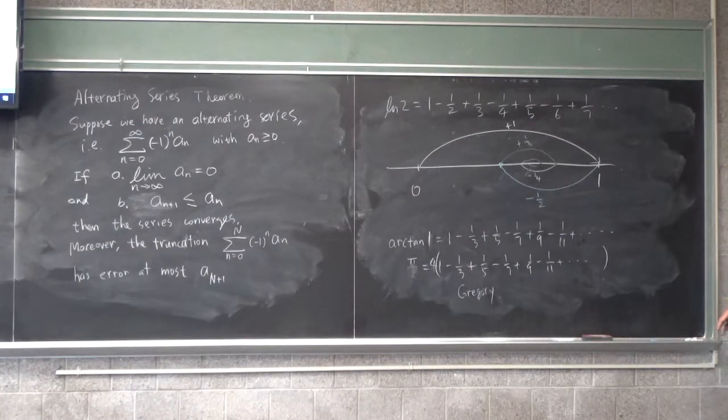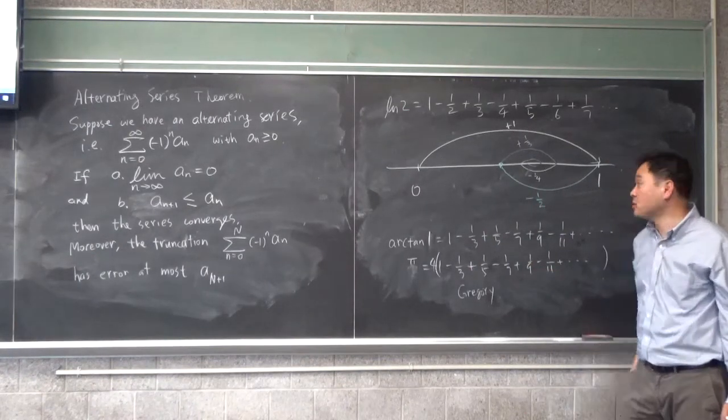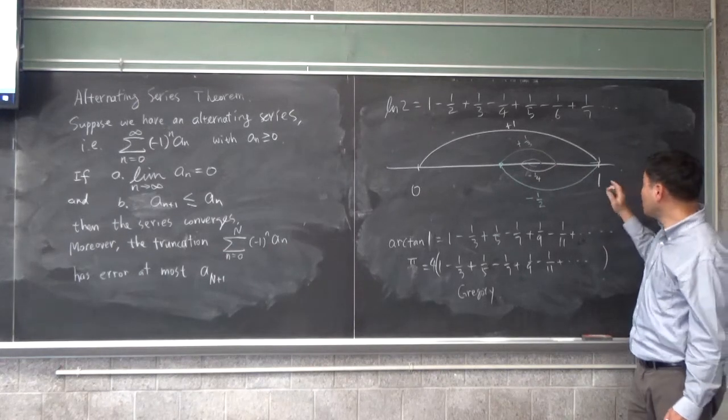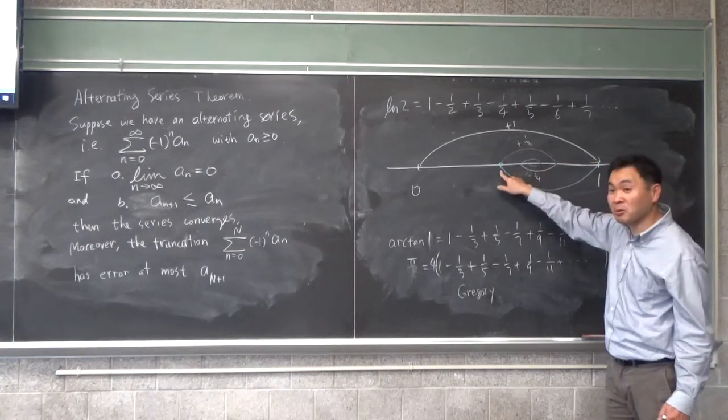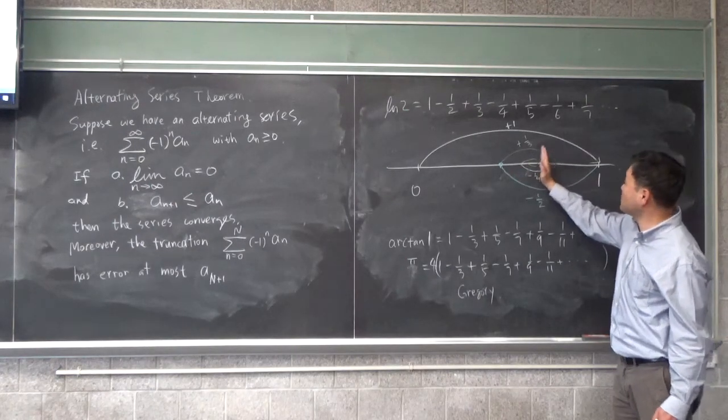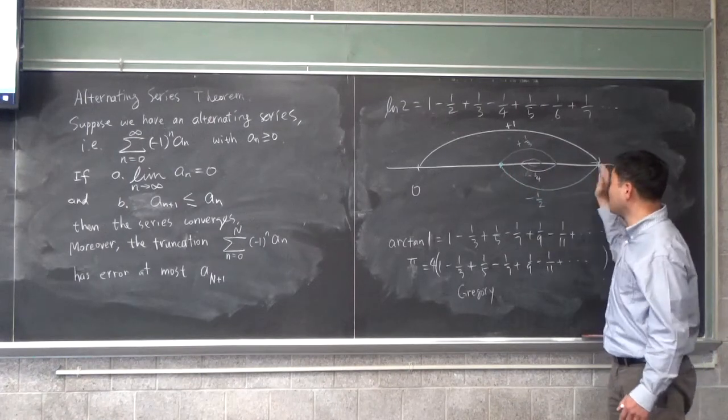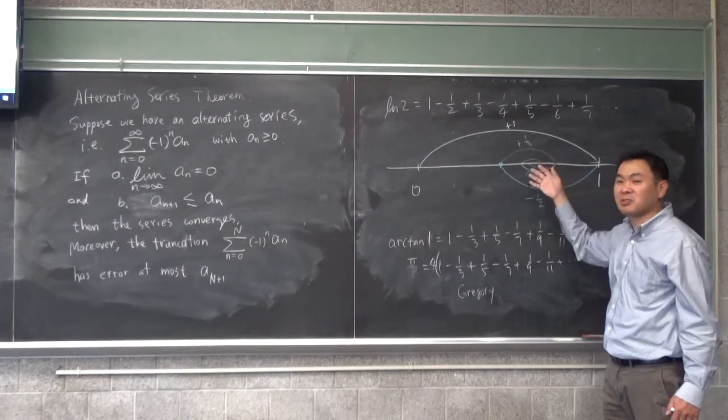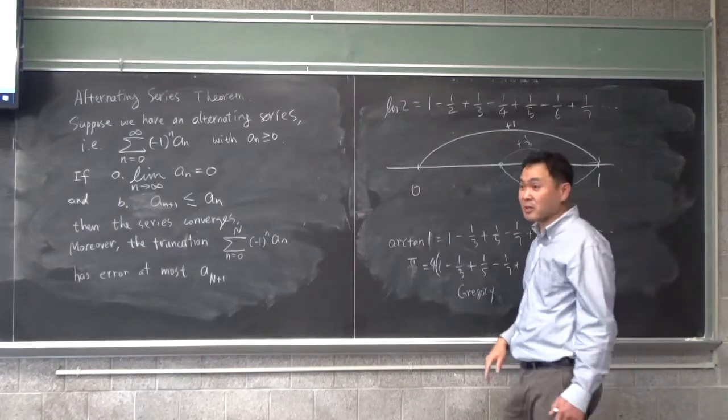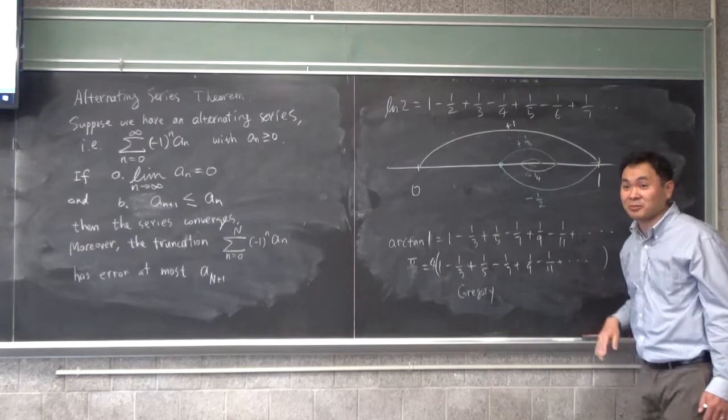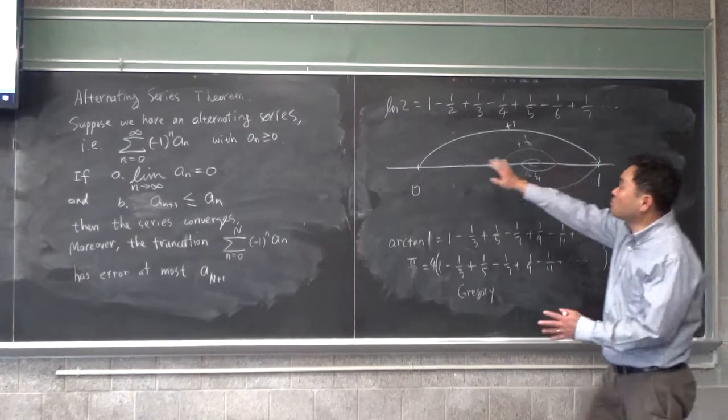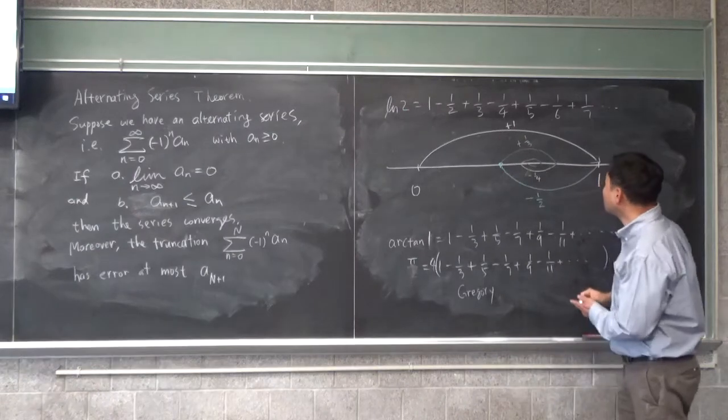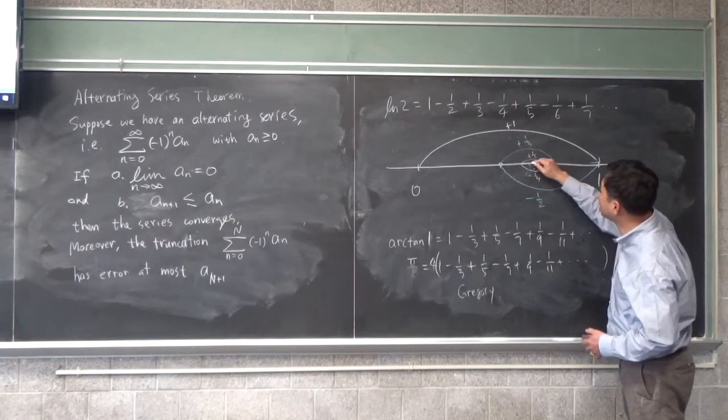Moreover, the truncation has error at most A capital N plus one. By the way, this picture actually gives you an idea of what the value of log of two is. See, log of two better be less than one, but bigger than 0.5. And according to this picture, it seems to be left of the half. The midpoint of 0.5 and one is 0.75, so it's slightly less than 0.75. So it's something like 0.69 something. So that's the actual value of log of two. And you can just look at it graphically.